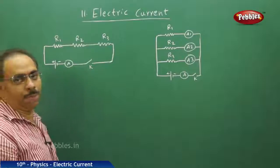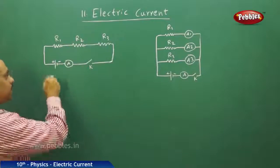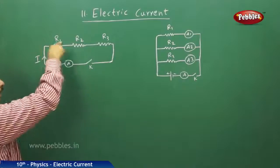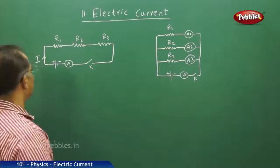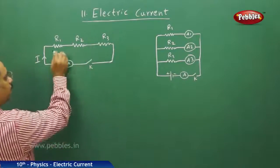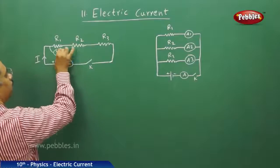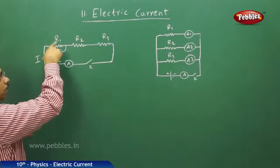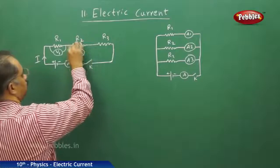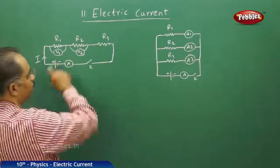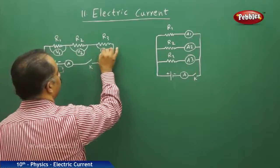Now there are three resistances connected here. As we discussed earlier, the amount of current passing through all three resistances is the same — let us assume it is I. I is the current through R1, R2, and R3 as well. But what is dividing here is the potential drops across R1, R2, and R3. Let us assume V1 is the potential drop across R1, so a voltmeter connected here shows V1. Similarly, V2 is the potential drop across R2, and V3 is the potential drop across R3.